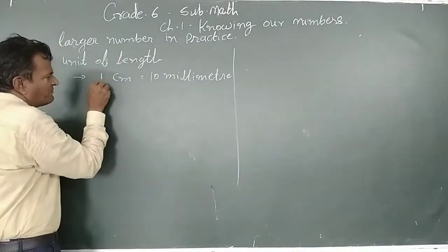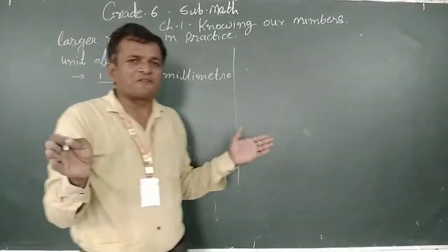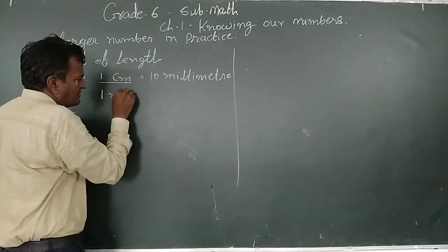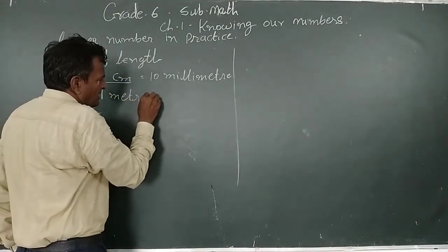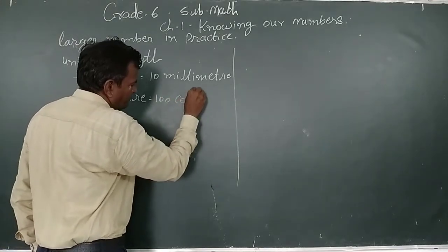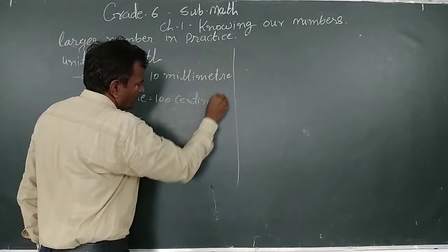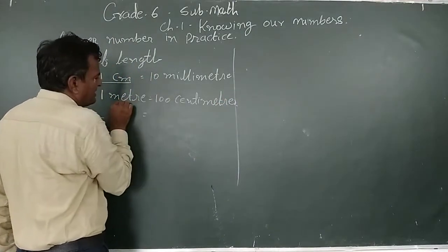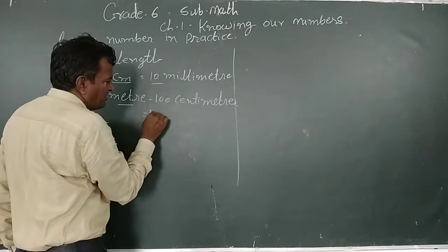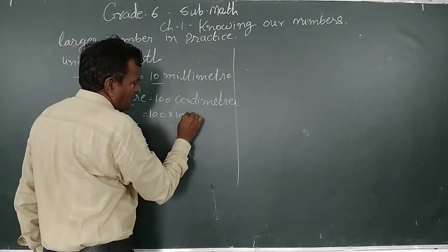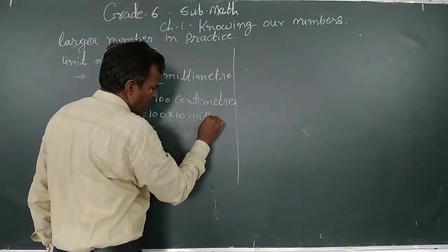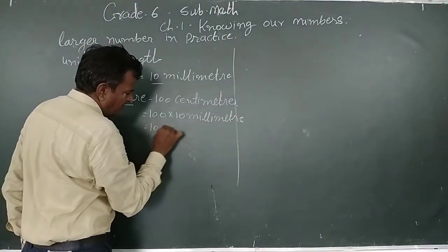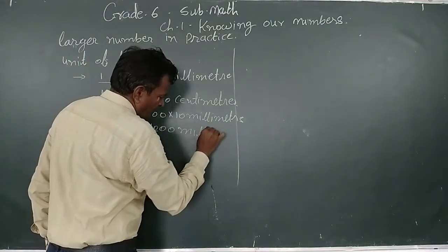If we find out a longer distance, suppose the length of a classroom or the length of a school, then we use meters. Therefore 1 meter equals 100 centimeters. If we write down the meter in millimeters, we do 100 centimeters into 10 millimeters, which means 1000 millimeters.